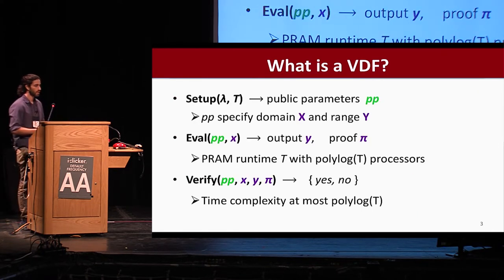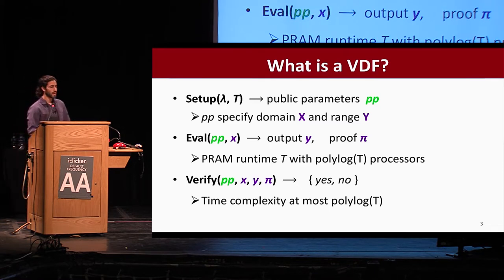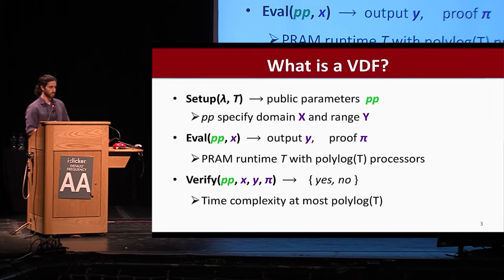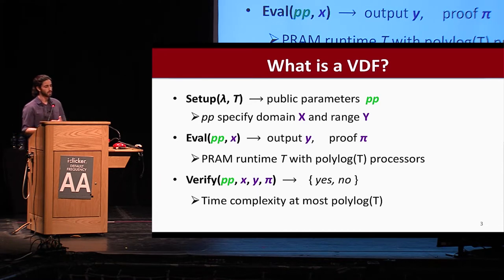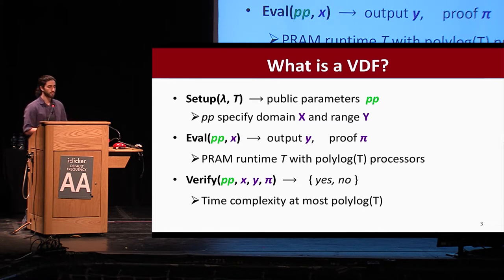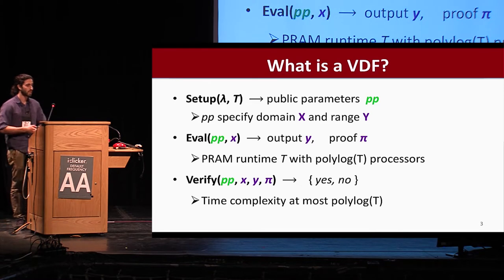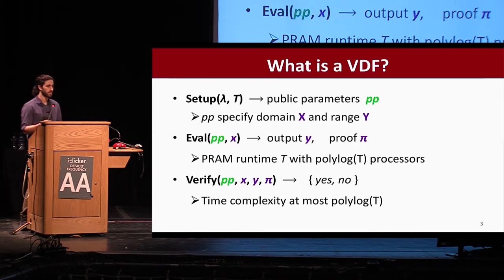More formally, a VDF involves three procedures: a setup procedure, an eval procedure, and a verify procedure. The setup generates public parameters from a security parameter and a delay parameter t, which determines the sequential work needed by the eval algorithm. Eval evaluates the underlying function and outputs the result along with, perhaps, a proof. Verify verifies that a given input, output, and proof are consistent. Importantly, eval should run in parallel time t with polylog(t) processors, and verify should have overall time complexity at most polylog(t).